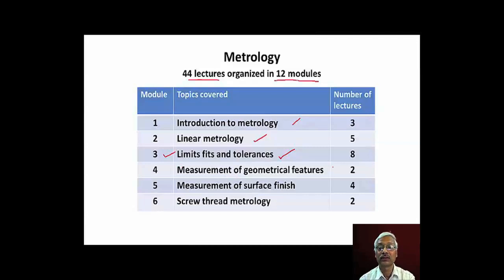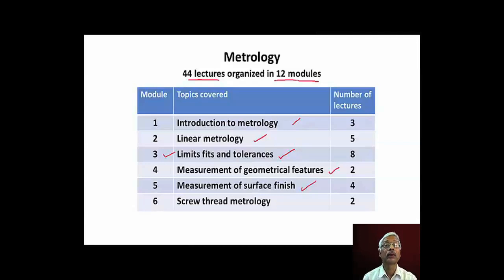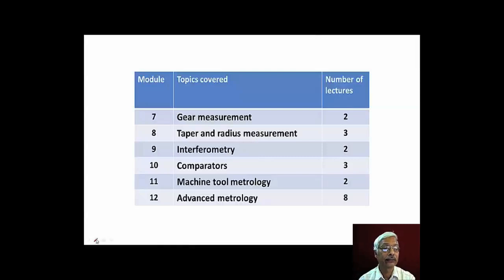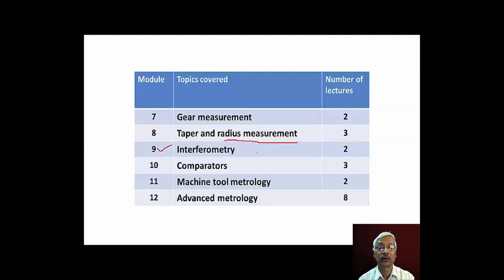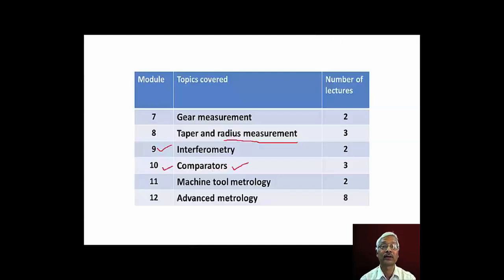In module number four, we will discuss about the measurement of geometrical features — mainly straightness measurement and squareness measurement. Then we will move on to measurement of surface finish and screw thread element measurements, gear element measurements, tapered measurement and radius measurement. In module number nine, we will be discussing about use of interferometry for measurement of flatness of precise surfaces and the construction and application of different interferometers. In module number ten, we will discuss about different types of comparators and their use in dimensional metrology.